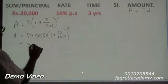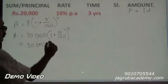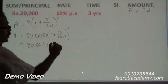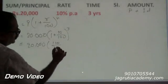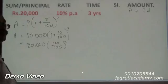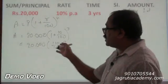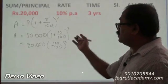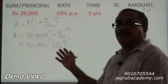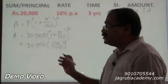Which is equal to 20,000 into 110 by 100 to the whole power 3. From here onwards, you can have two approaches. You can go with three times of 110 by 100, into 110 by 100, into 110 by 100 and solve this to get the amount.